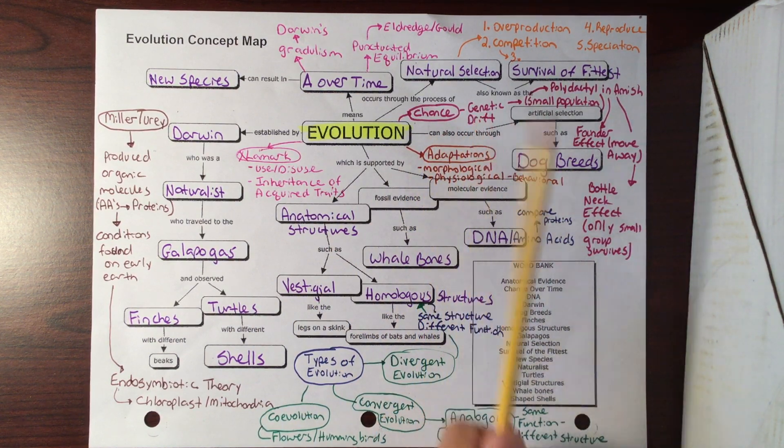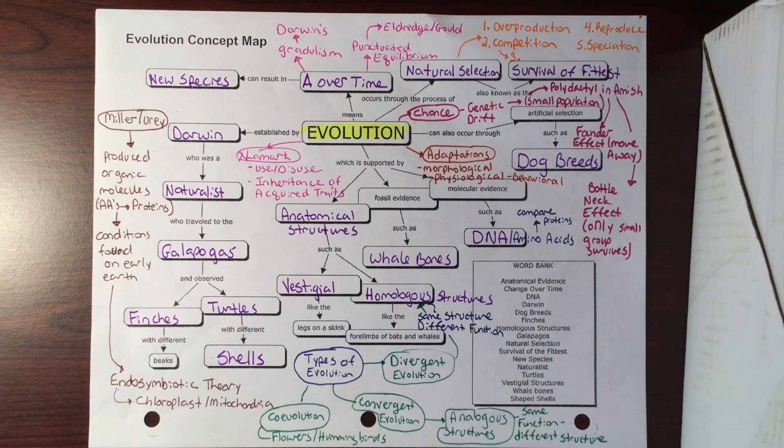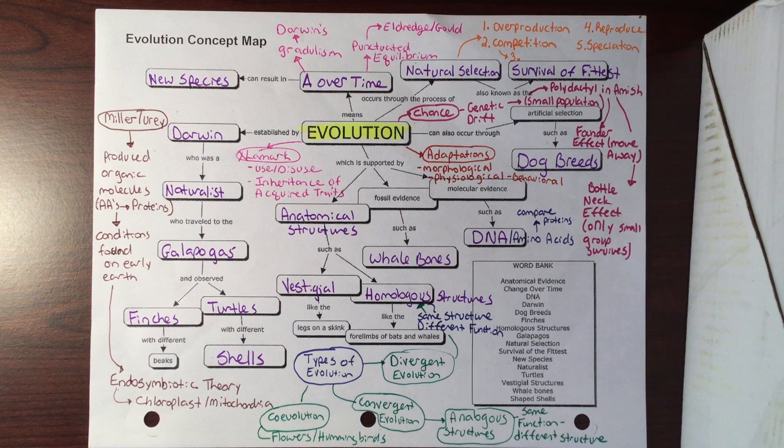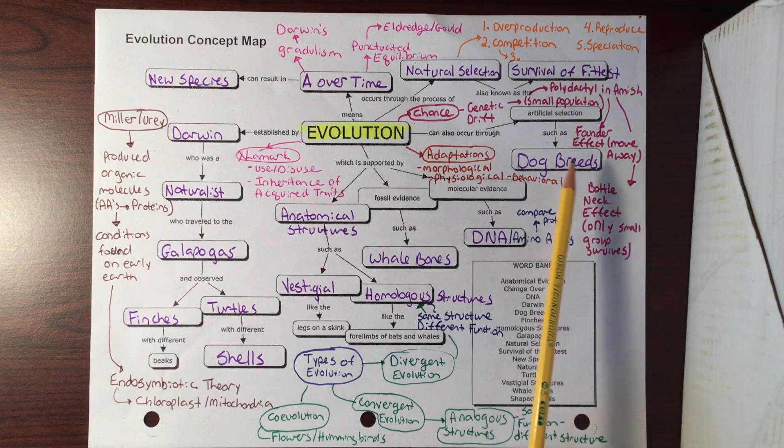Besides natural selection, we said that evolution can also occur by chance, and this is kind of the genetics portion of it that we looked at. We said an idea of it is genetic drift. Now genetic drift will happen usually in small populations because it has to deal with the allele frequencies. In a smaller population, we're going to have less of these allele frequencies there. It's easier to lose those particular favorable traits. For instance, polydactyly, where you have an extra finger or toe - we see it a lot within the Amish.